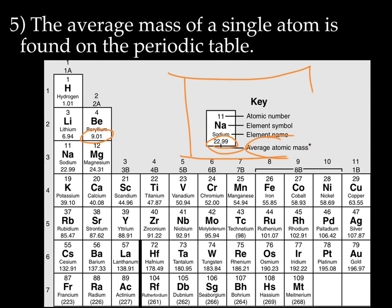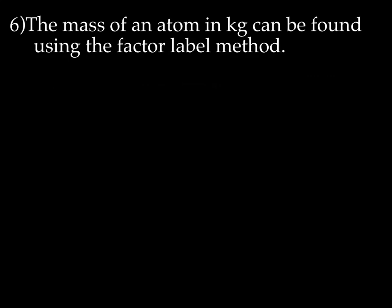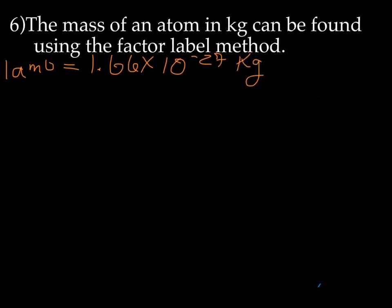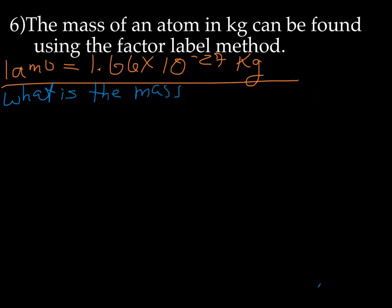You can grab your periodic tables and put next to average atomic mass that the units are AMU. The mass of an atom in kilograms can be found using the factor label method. I know you were hoping this math would go away, but it won't. You just wrote down your new equality: 1 AMU equals 1.66 times 10 to the negative 27 kilograms. You will see questions like this: what is the mass of beryllium in kilograms?